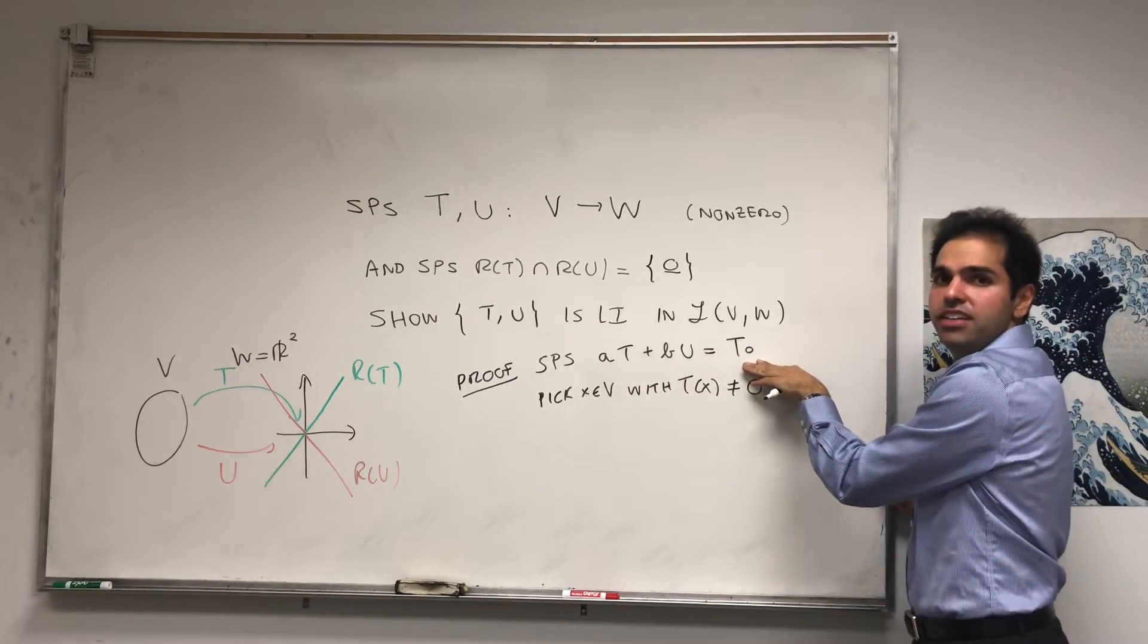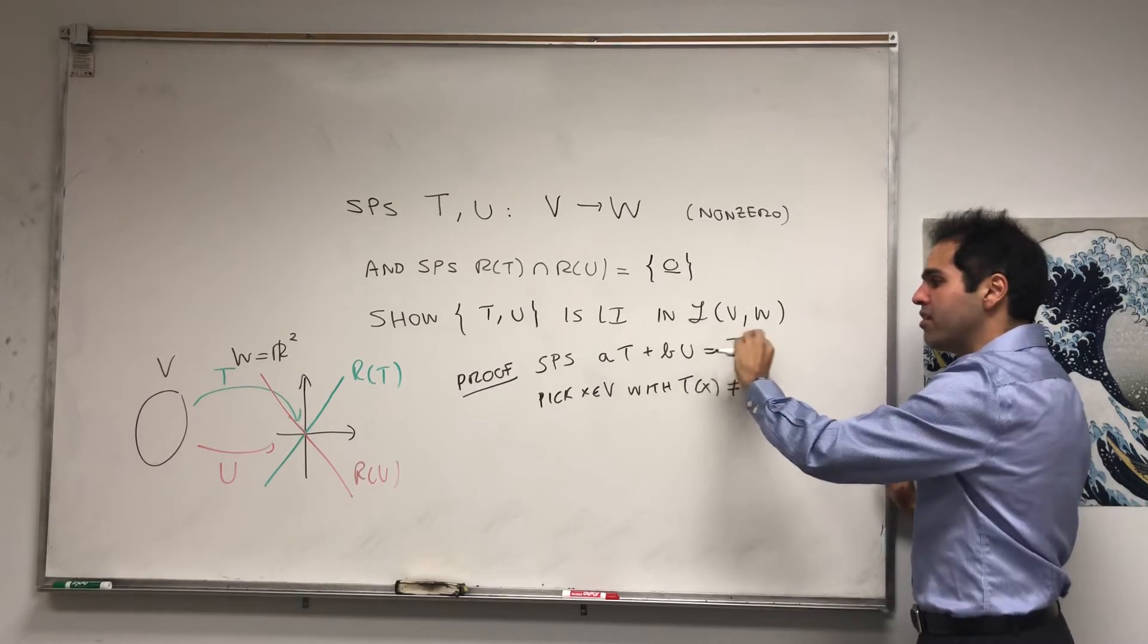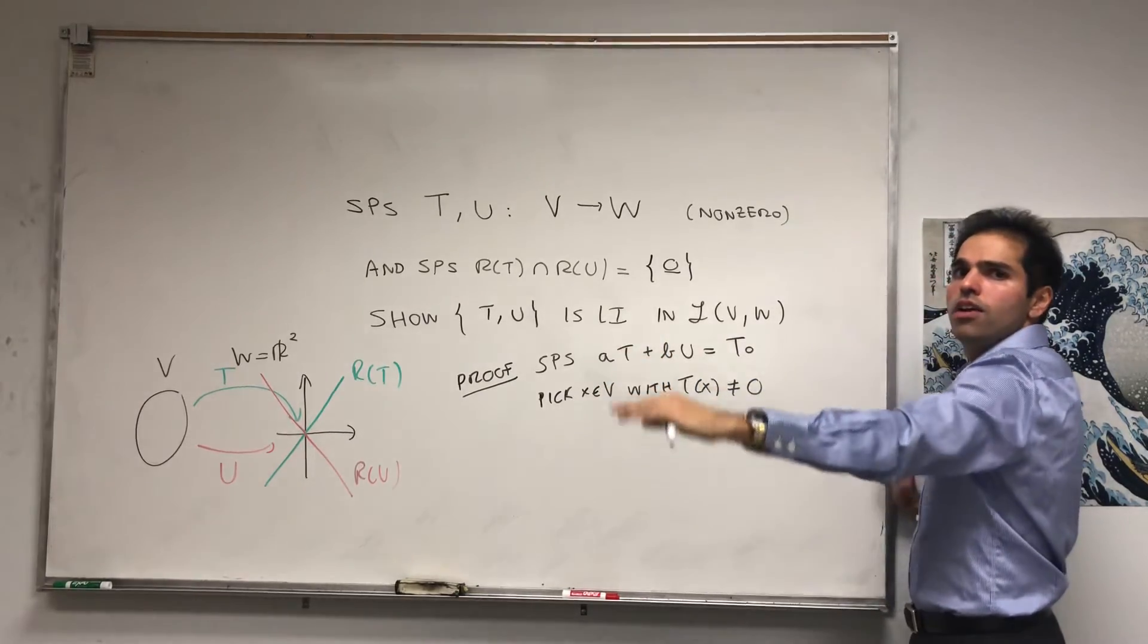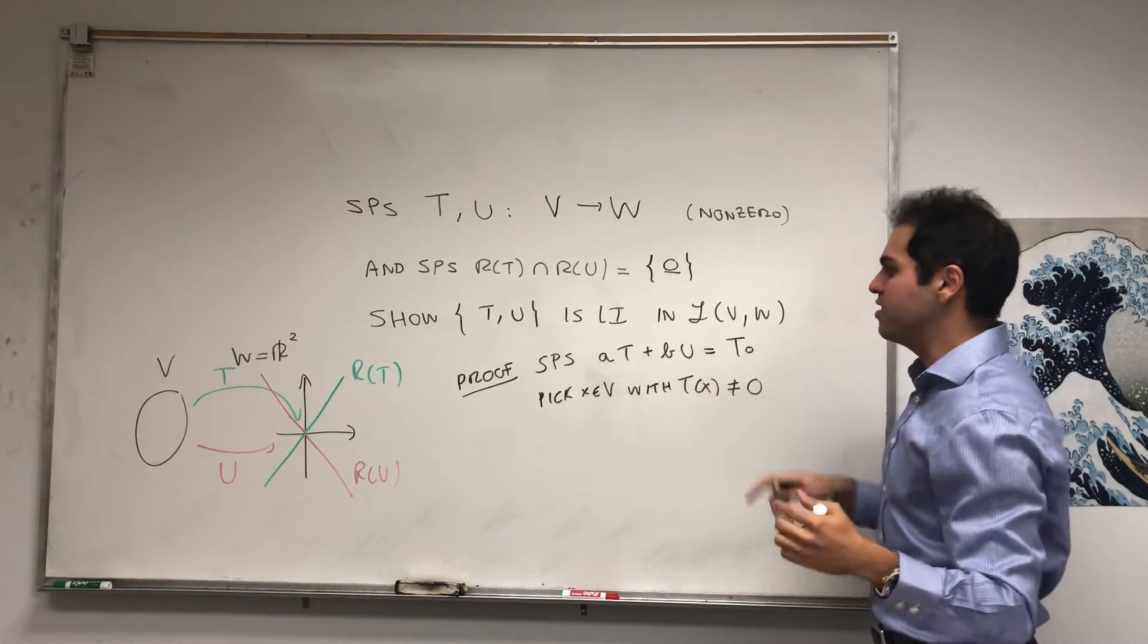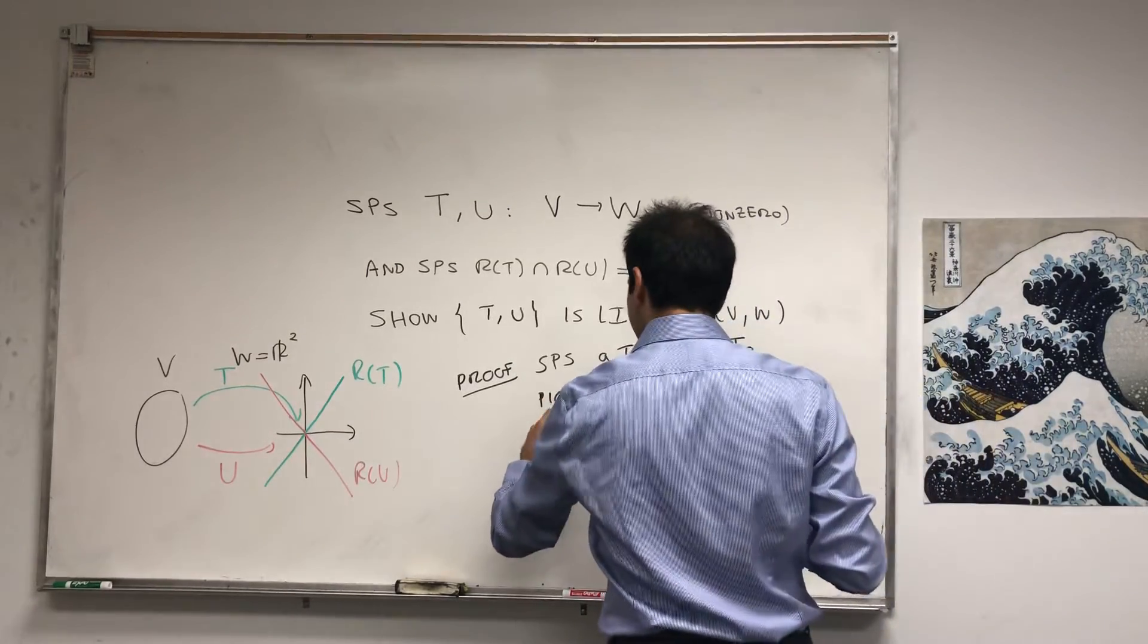And this is an equality in linear transformations. In particular, this equality is true whichever X you apply it to. So in particular, it's true if you apply it to this specific X. Then we get AT plus BU of X equals the zero transformation at X.